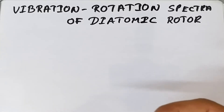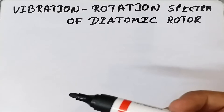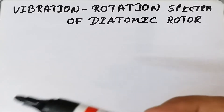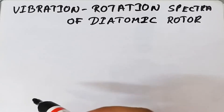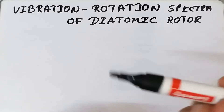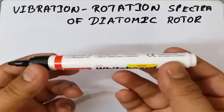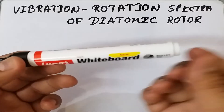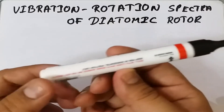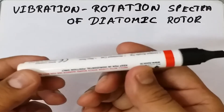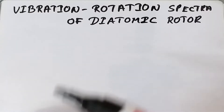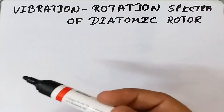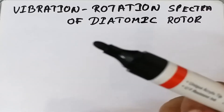When a molecule is transitioning in a vibrational state, that molecule will also rotate, because the rotational energy is less compared to the vibrational energy. So if a molecule is vibrating, it will also rotate simultaneously, and both the vibrational as well as the rotational transitions will be seen simultaneously in a molecule.